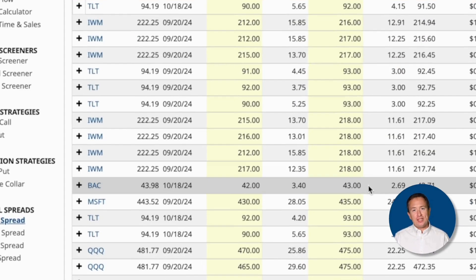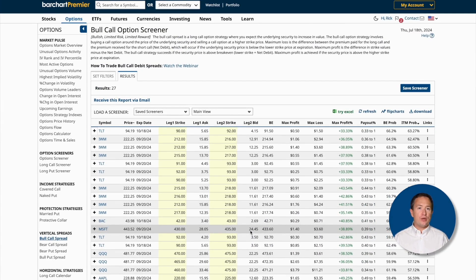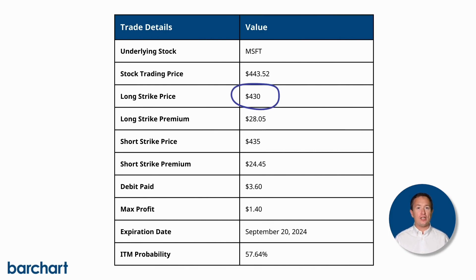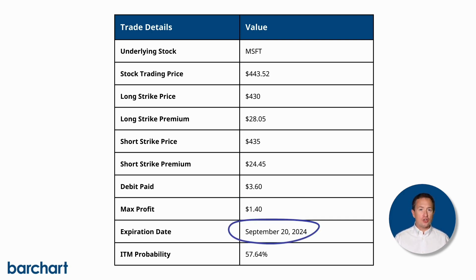I particularly like this trade idea with Microsoft as the underlying asset. For context, the stock is trading at $443.52 at the time of recording. So the screener suggests buying a call with a $430 strike for $28.05, and then selling a call with a $435 strike, collecting $24.45. That results in a net debit of $3.60 and a maximum profit of $1.40. The trade expires on September 20th, 2024, and has a 57.64% chance of expiring in the money.